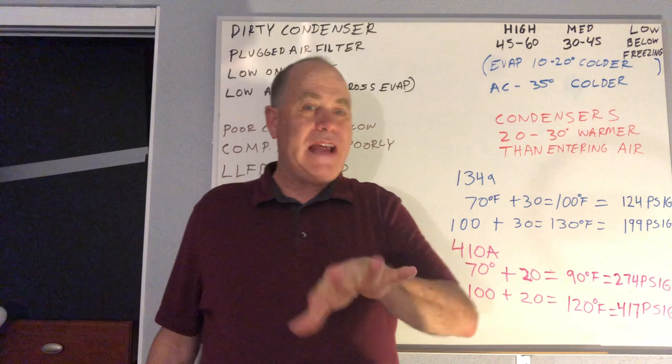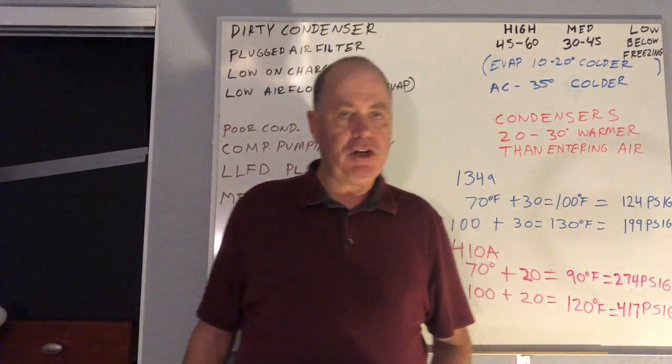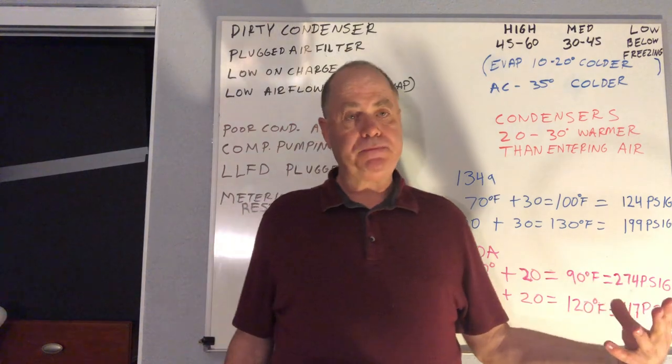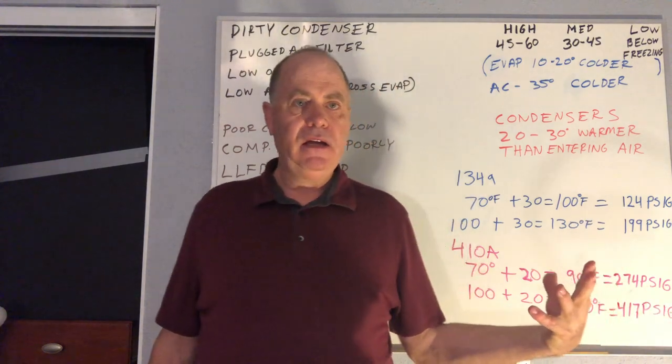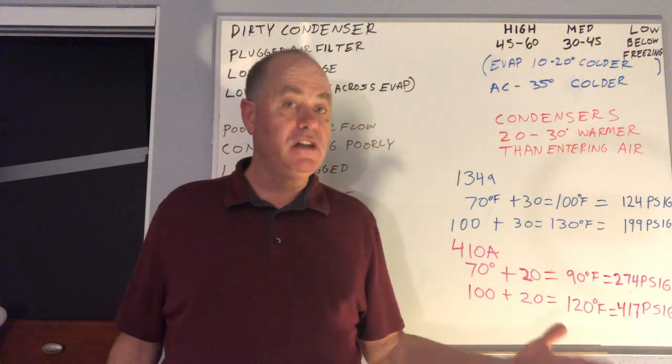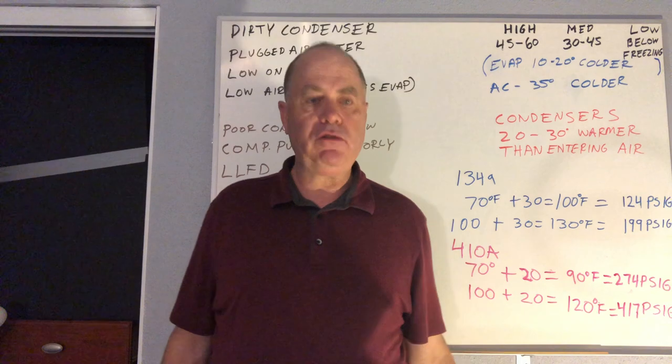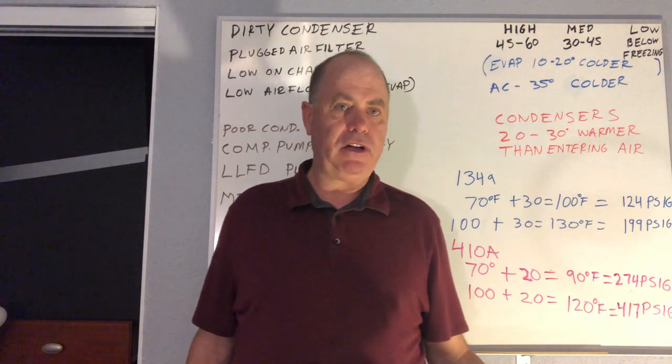If you're dropping the temperature on average, about 20 degrees across your evaporator, that's pretty good. If the relative humidity is high, you'll probably only be able to drop at 18 or 19 degrees. If the relative humidity is low, you may be able to drop that temperature 22, 23 degrees. 20 degrees across your evaporator.